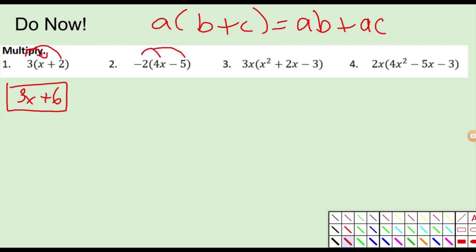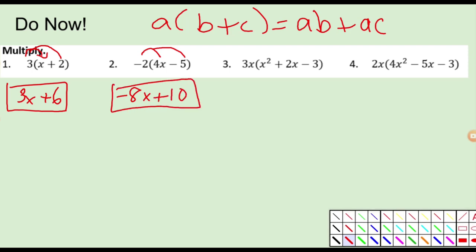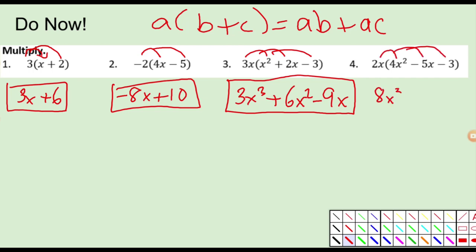Nice and simple. Let's do these all really fast here. So negative 2 times positive 4x and negative 2 times negative 5. Game over. Distributive property, no problem. 3x cubed plus 6x squared subtract 9x. And the last one. Multiply, multiply, multiply. 8x cubed subtract 10x squared. And the last one is negative 6x. Game over.